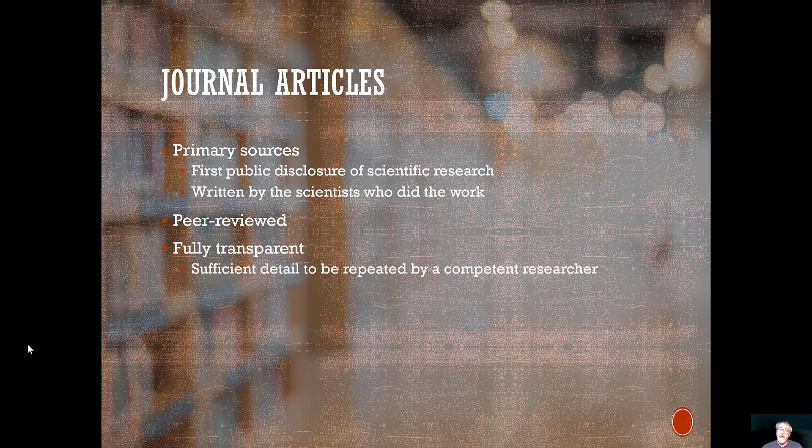Journal articles are also fully transparent. They're written with sufficient detail that other competent researchers could go in and repeat the experiment if they wanted to. Now, in practice, that doesn't happen very often. However, even if they don't repeat the experiment, knowing how the experiment was done will allow a researcher to evaluate for themselves whether the results are reasonable and whether the conclusions are justified.